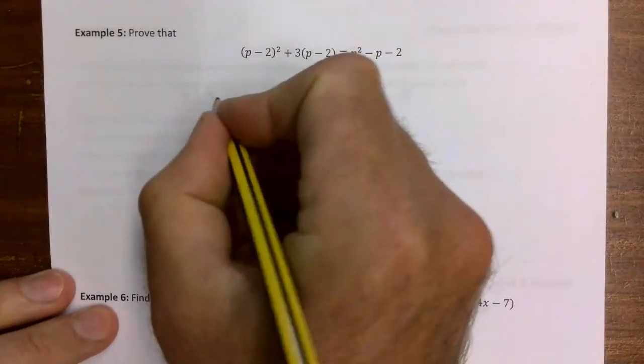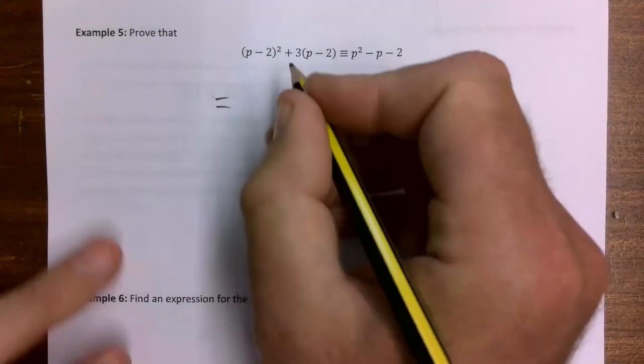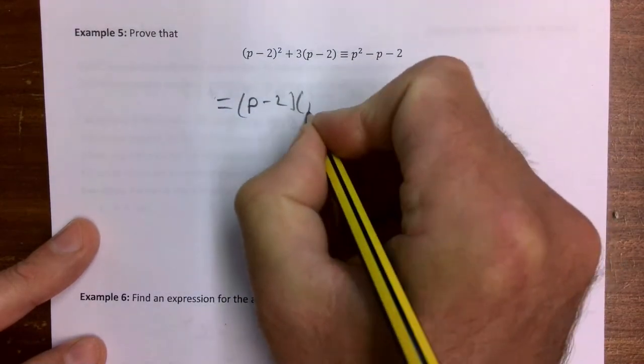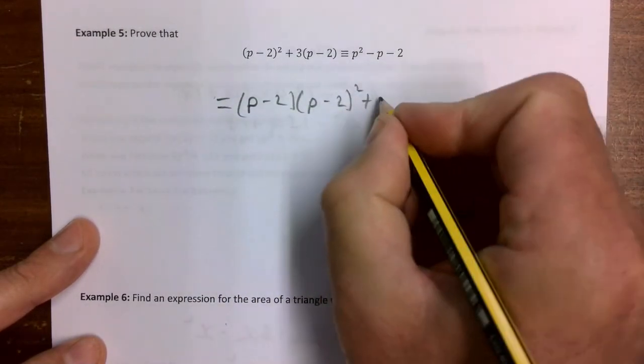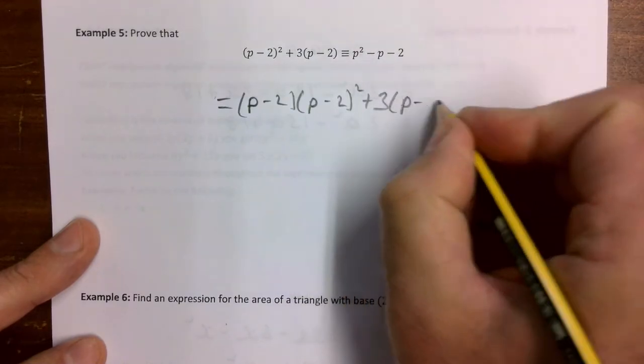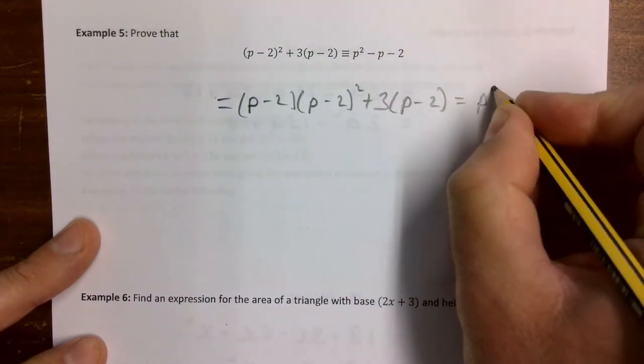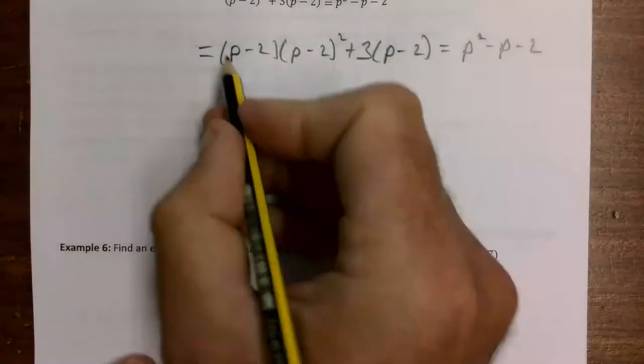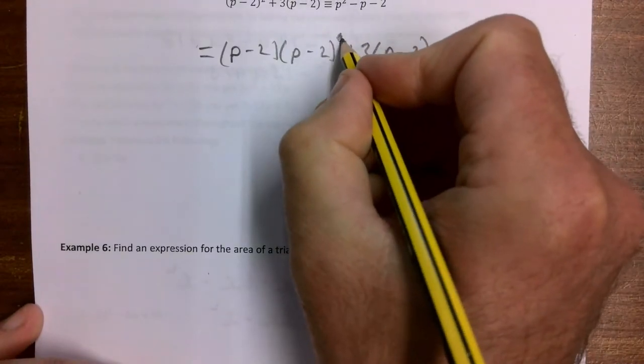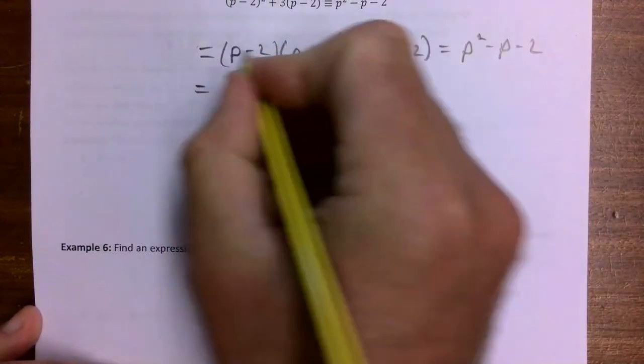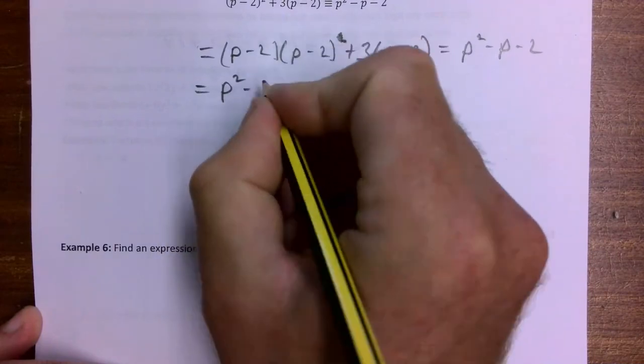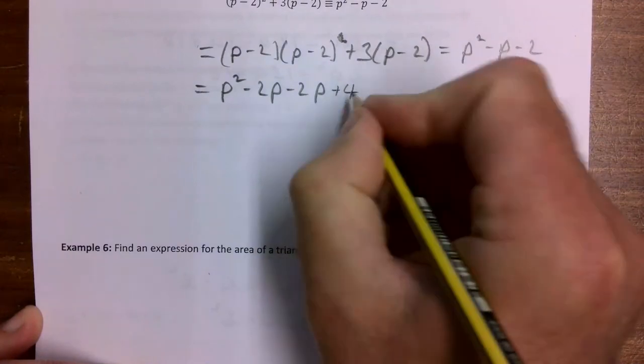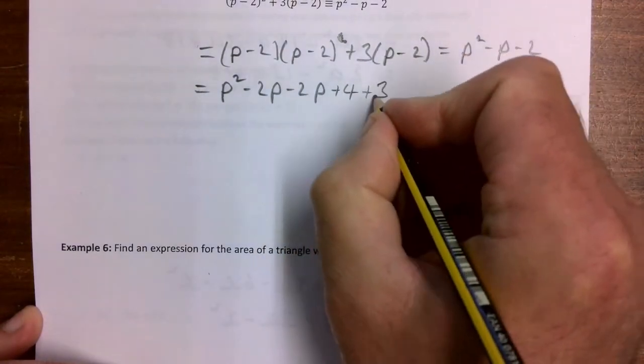I need to multiply the brackets. So we have (p minus 2)(p minus 2) all squared plus 3(p minus 2). All I've done really is show what we're going to multiply. I've made a mistake there. So we go: p squared minus 2p minus 2p plus 4 plus 3p minus 6.